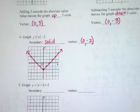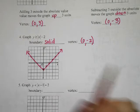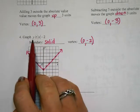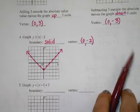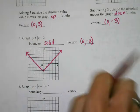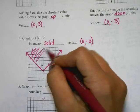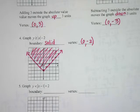With absolute values, shading gets a little trickier. You still think above the line, but do it half at a time. This is a greater than, so I want things that are above — I want above that line and above that line, so I want inside my v.